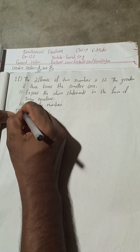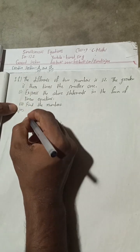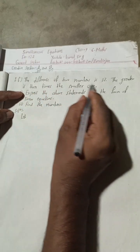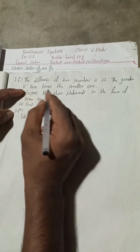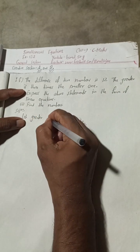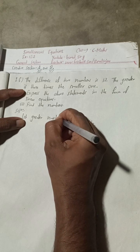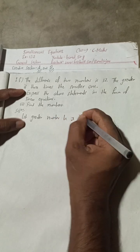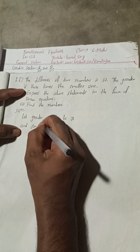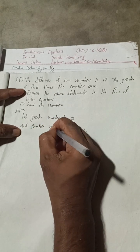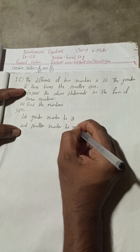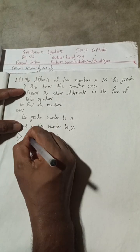Now let's begin the solution. The difference of two numbers is 12, the greater is three times. So let the greater number be x and the smaller number be y. By first condition: